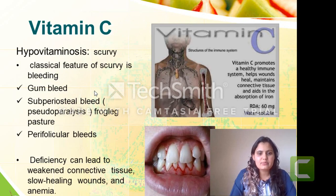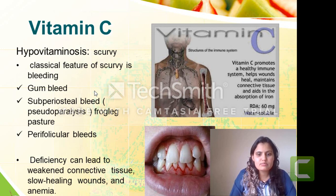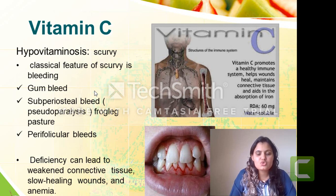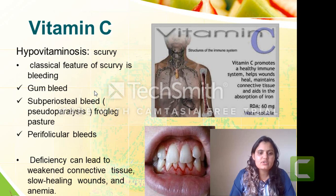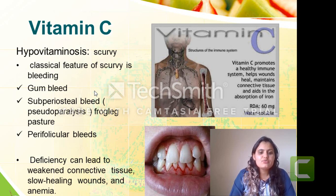If there is deficiency of vitamin C, there will be a disease known as scurvy. The classical feature of scurvy is bleeding. It can lead to manifestation of bleeding in gums, then subperiosteal bleeding — meaning around the bones or joints — which can be manifested as pseudoparalysis in a child. There will be joint and bone bleeding, and due to that, the child is not able to crawl or walk, leading to a frog-like posture. It can also lead to bleeding in the perifollicular area, meaning around the hair, as well as weakened connective tissue and slow wound healing.